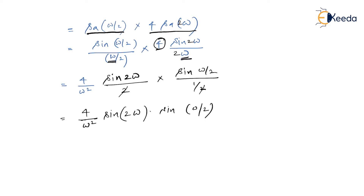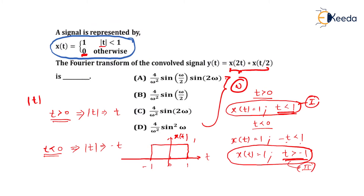Option A is the correct answer. The key conceptual point here is how to interpret the meaning of |t|: without understanding that |t| < 1 describes a rectangular function from −1 to 1, the problem could not be solved. If the rectangular function had been given directly, this problem would have been straightforward.